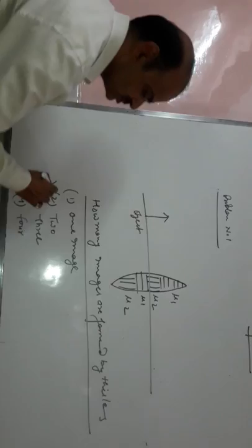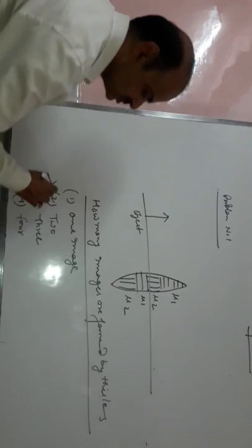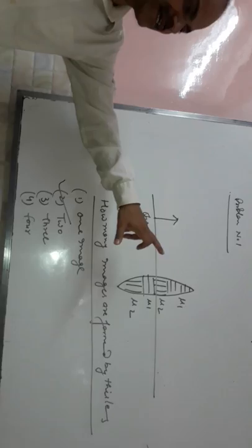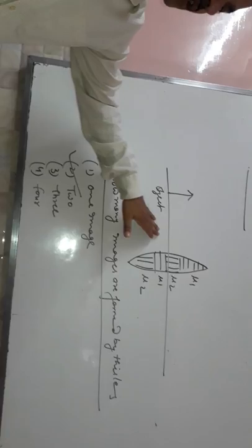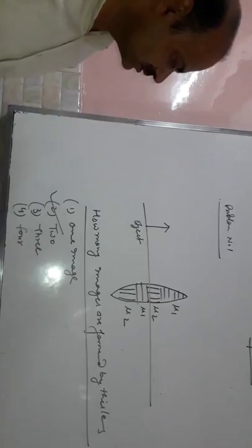Its answer is 2 because this object has two materials and two foci. This material has two foci and it forms two images of an object. Problem number 2.